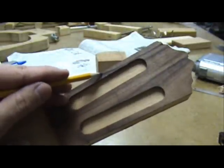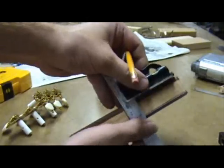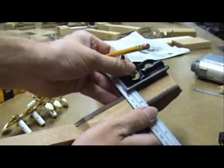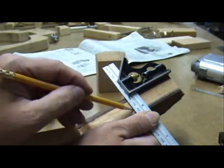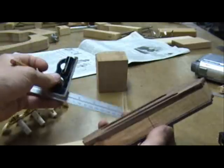Then mark the middle of the tuner slots. I have these lines conveniently marked on my peg head template. Square these lines down the side of the peg head on both sides.